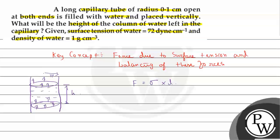From the figure we can clearly see that surface tension acts at the circumference, so the length l is the circumference. We can write the force F equals sigma multiplied by 2πr for each surface. Therefore, the net upward force F_p equals sigma multiplied by 4πr.